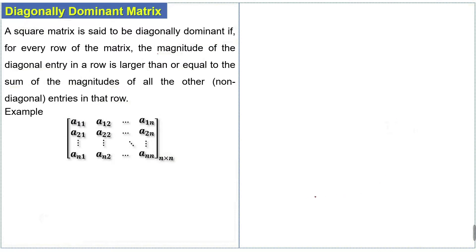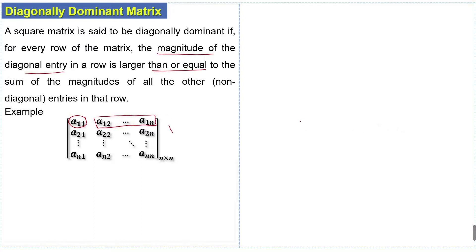The magnitude of the diagonal entry in a row is larger than or equal to the sum of the magnitudes of all other non-diagonal entries in that row. So the magnitude of a₁₁ will be greater than or equal to the sum of all non-diagonal entries in the first row.